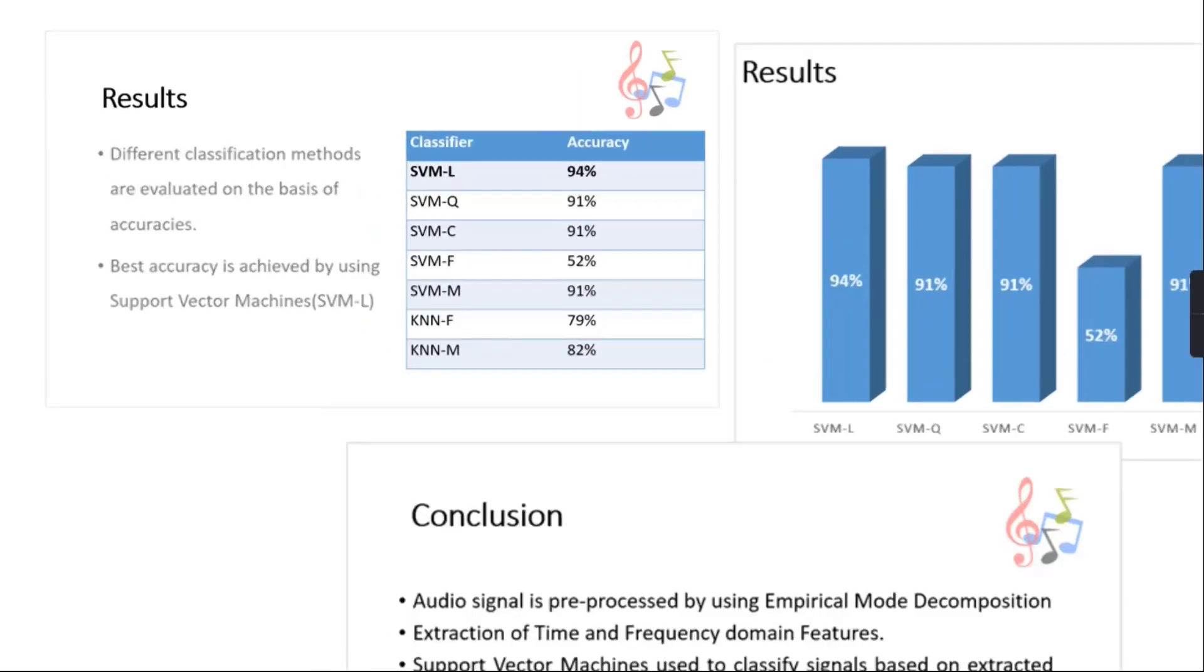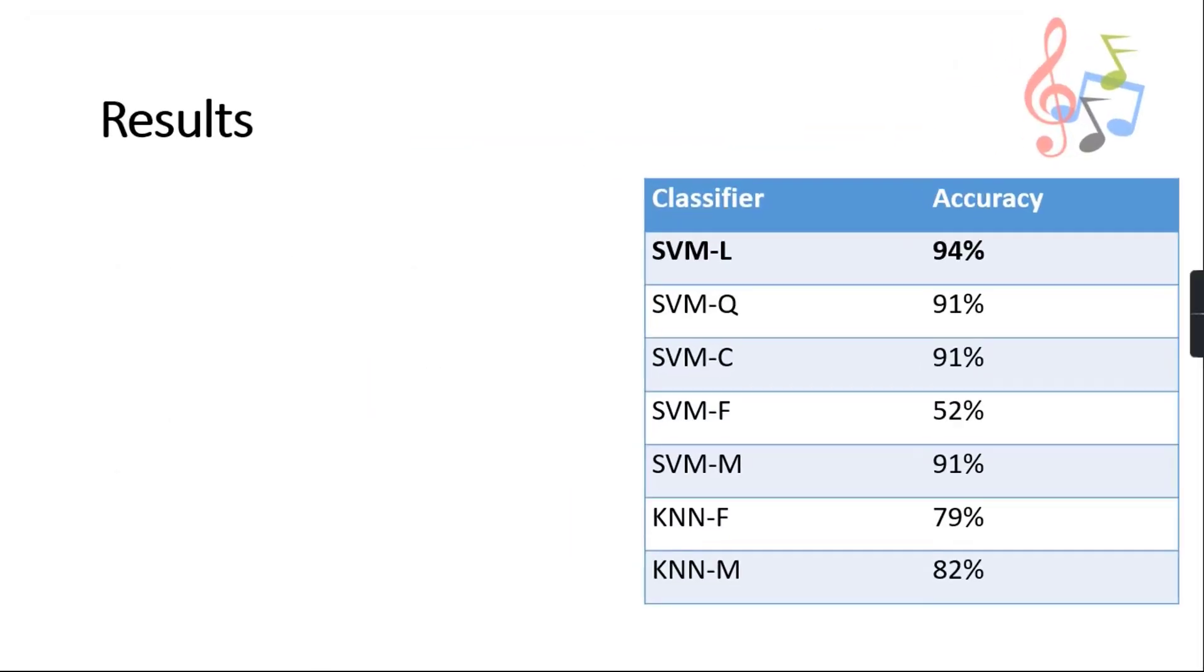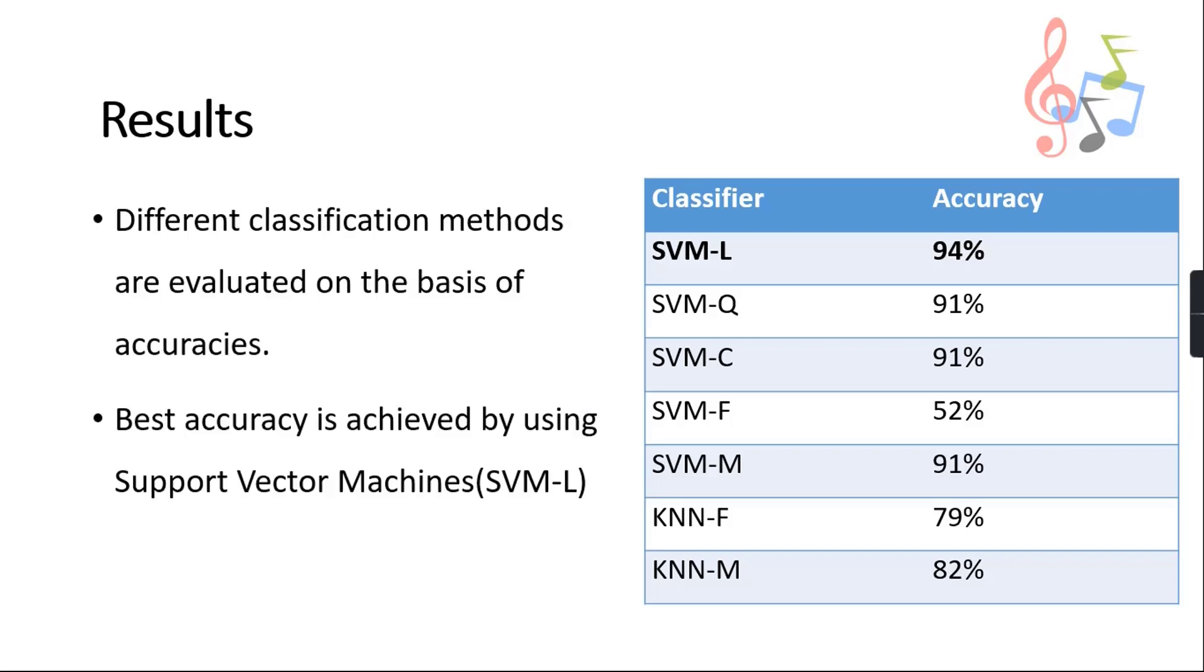Now moving on to the results. This table shows the accuracy by using different classifiers. Different accuracies have been achieved using different classifiers. As you can clearly see, we have achieved 94% which is the highest accuracy using SVM linear.